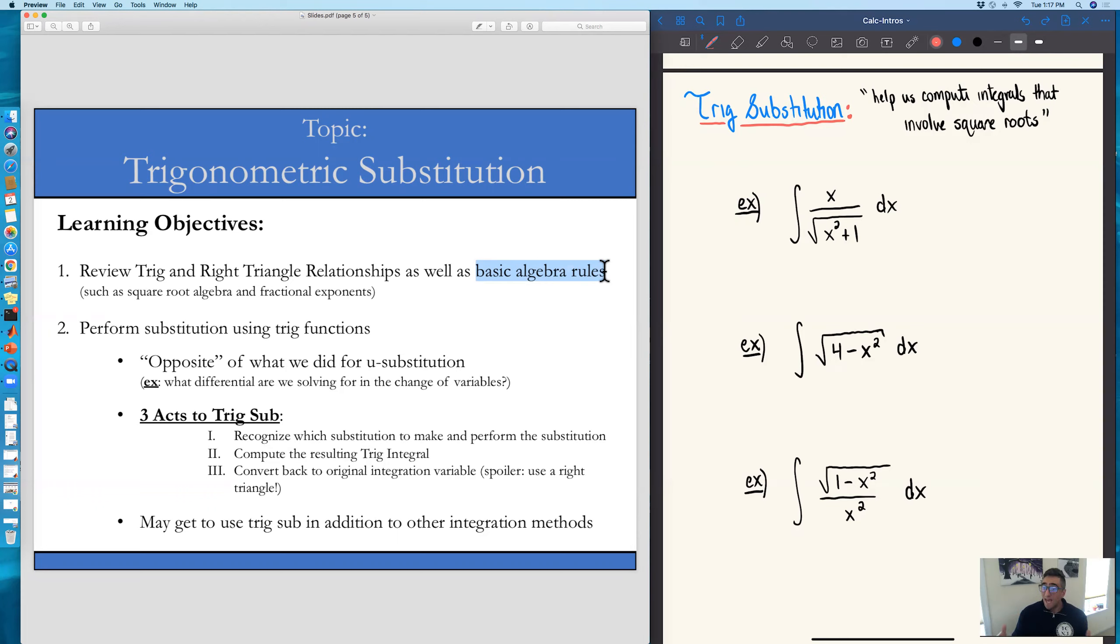So the big ideas for today: we're going to learn how to do trig substitution. Bits and pieces of today will feel like the opposite of what we did for u substitution. We're going to introduce kind of more complicated looking functions into our integrals, those functions being all trig functions. And by doing so, we're going to see we're able to get rid of square roots.